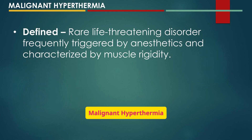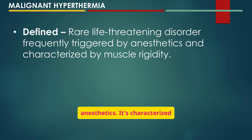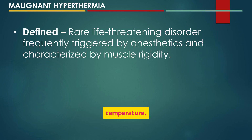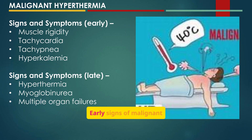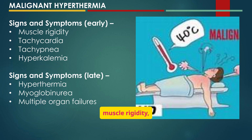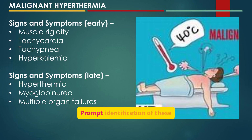Malignant hyperthermia is a rare but life-threatening disorder triggered by certain anesthetics, characterized by muscle rigidity and a rapid increase in body temperature. Early signs include muscle rigidity, tachycardia, and tachypnea. Late signs include hyperthermia, myoglobinuria, and multiple organ failure. Prompt identification of these symptoms is essential.